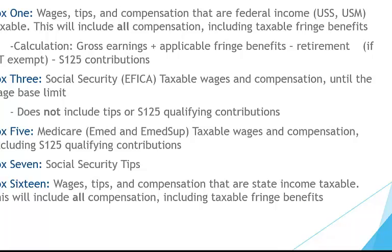Box 5 is Medicare Taxable Wages and Compensation, excluding section 125 contributions. Notice that it's EMED and EMED SUP wages. The 941 requires EMED and EMED SUP to be broken out as two separate jurisdictions; however, the W-2 requires them to be summed together in Box 5. Box 7 is your Social Security Tips. Box 3 and Box 7 summed together should not cross the threshold of $113,700.